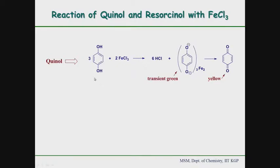We will do several reactions with ferric chloride. For the first sample, quinol — if quinol has this structure, it is easily dissolved in water. First we dissolve this quinol, let us say a pinch or one spatula, around 50 to 100 milligrams, in 1 milliliter of water. Then we will add ferric chloride solution to this.